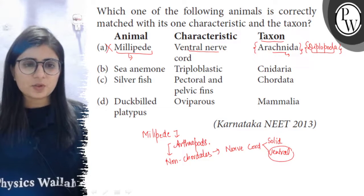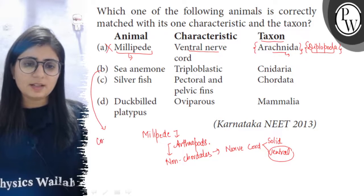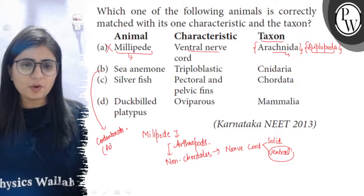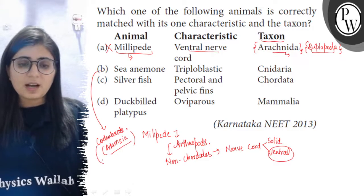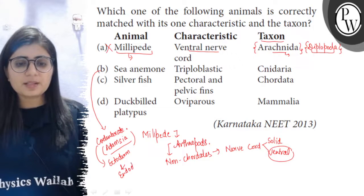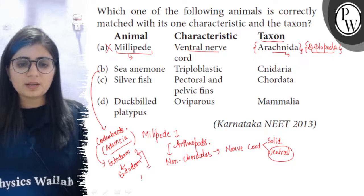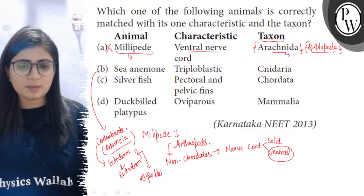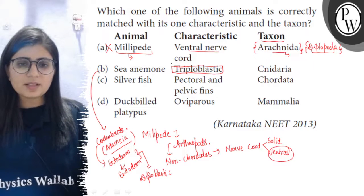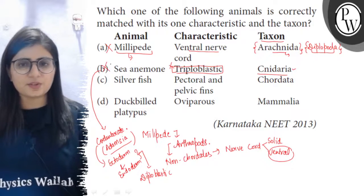The second option is sea anemone. Sea anemone is a cnidarian and its scientific name is Adamtia. Cnidarians have two germ layers — ectoderm and endoderm — with no mesoderm. Animals with only two germ layers are called diploblastic. However, the option states that sea anemone is triploblastic, which is incorrect since there is no mesoderm in their gastrula stage. So although the taxon cnidaria is correct, the characteristic given is wrong, and this match is discarded.